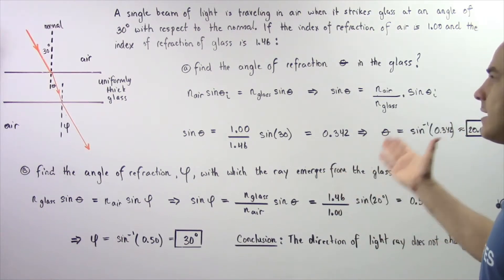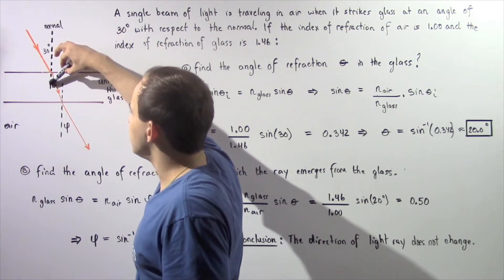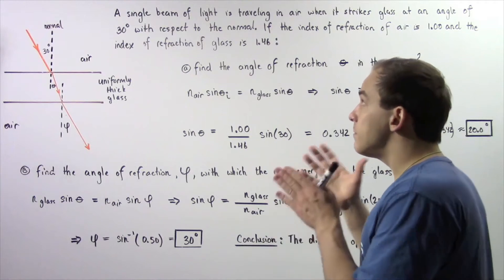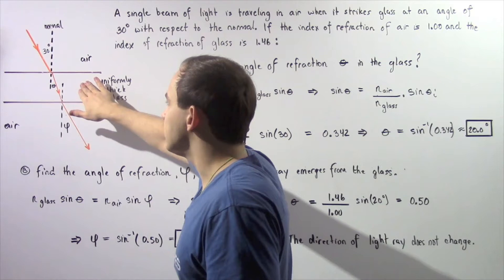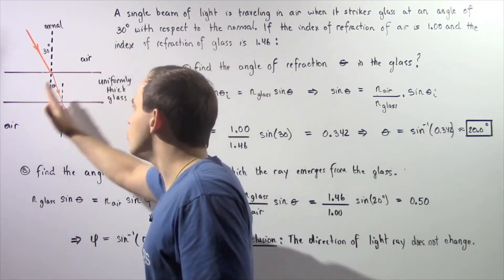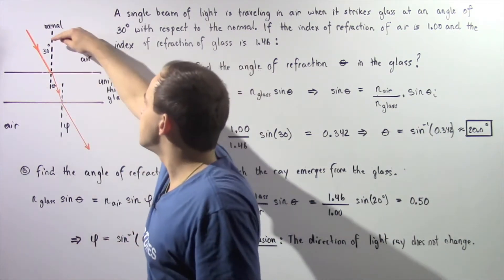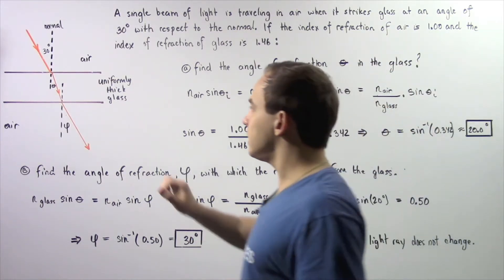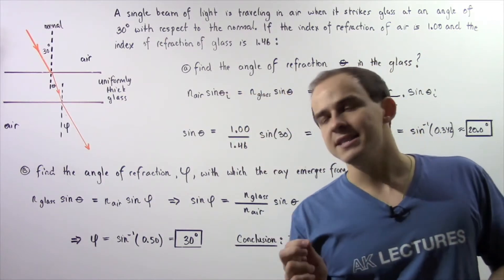Find the angle of refraction theta inside our glass — we want to find the following angle theta. As a result of the fact that the beam of light travels with a higher velocity in air than in glass, the ray of light will essentially bend inward toward the normal. This angle theta will be less than our 30 degree angle. To calculate the exact value of angle theta, we have to apply Snell's Law.